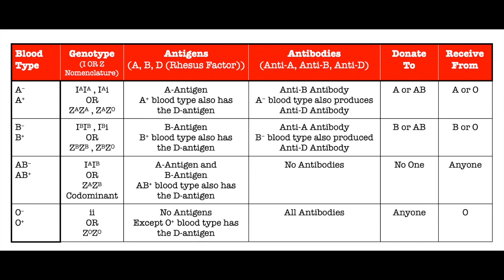Here's a summary of the blood types, their genotypes, the antigens they have, the antibodies they produce, and who they can donate to and receive from. If you click the link in the description below, you can get your own copy of the summary table, plus extra notes on the confusions and frequently asked questions about blood donation, as well as what the D antigen immune response does to human beings, and what blood typing has to do with transplants.